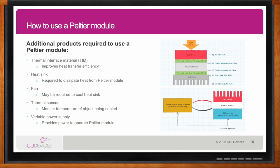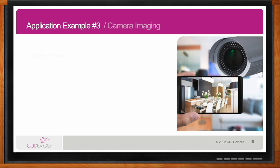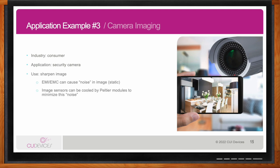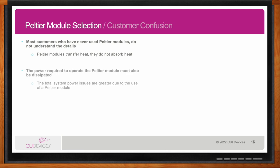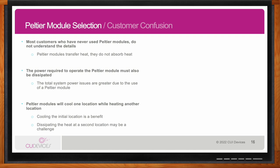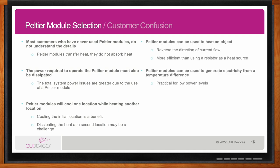In the consumer market, one application is a security camera where Peltiers are used to cool the image sensors to minimize noise caused by electromagnetic interference, which sharpens up the image on the monitor. The biggest takeaway is that Peltiers transfer heat — they don't absorb it. They function like a heat pump, cooling one side and moving the heat to the other, so you always need to get rid of that extra heat. You also need to consider the power supply used to power the Peltier, as the heat generated from it should also be dissipated.